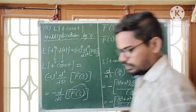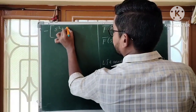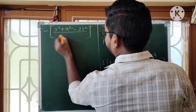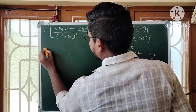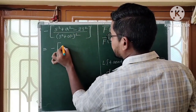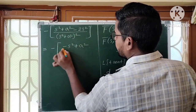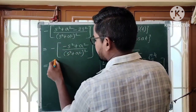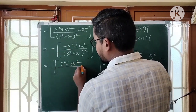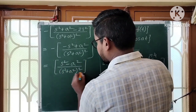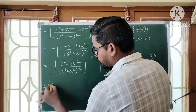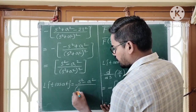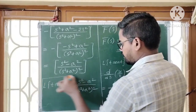Simplifying further: S²+A² minus 2S² gives minus S²+A². Distributing the outer minus sign: minus times (−S²+A²)/(S²+A²)² gives (S²−A²)/(S²+A²)². Therefore, the Laplace transform of T·cos(AT) equals (S²−A²)/(S²+A²)². This is the final answer.